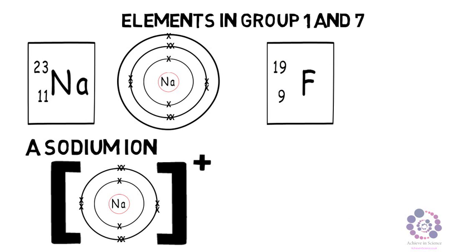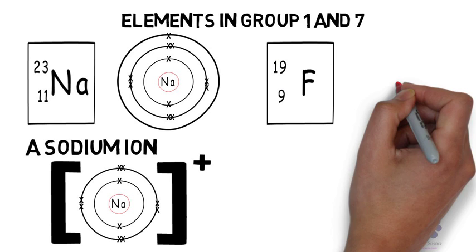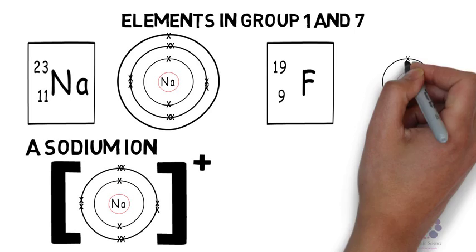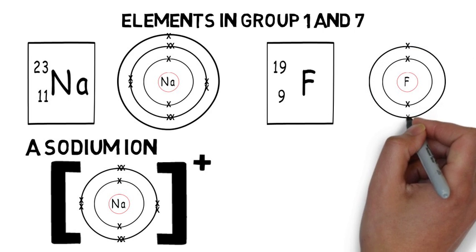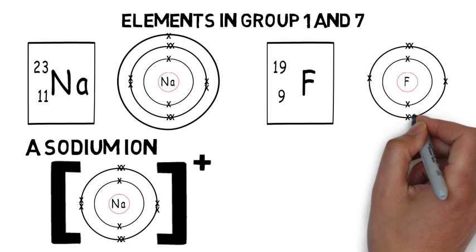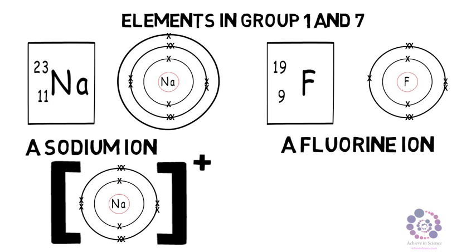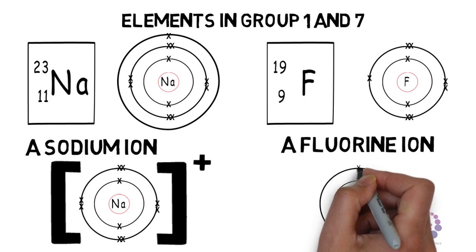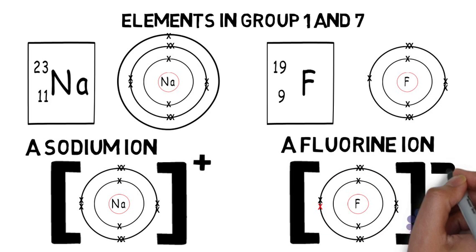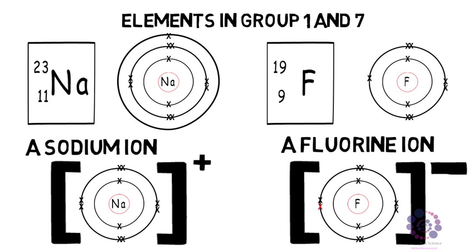On the other hand, we have fluorine from group 7. It has the electronic configuration of 2 and 7. A fluorine ion is formed when it gains an electron. This can be shown via the diagram below, where again because it is an ion, it is shown in square brackets, and as it has gained an electron, it is negatively charged.